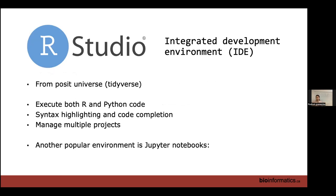RStudio is developed by a different group and is an integrated development environment — this is how we interact with the R language itself. It's from the Posit universe, which develops a whole bunch of functions and packages for R, formerly known as Tidyverse. It can execute both R and Python, which is one reason they're moving away from the R moniker. It has built-in syntax highlighting and code completion, and you can manage multiple projects to keep them separate.